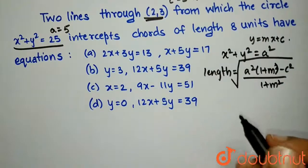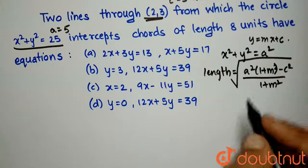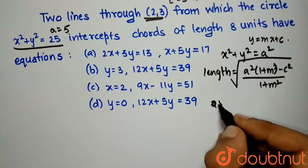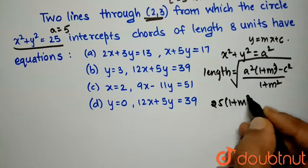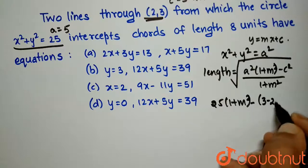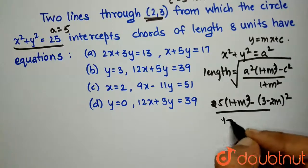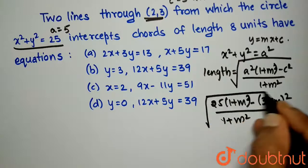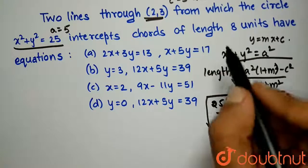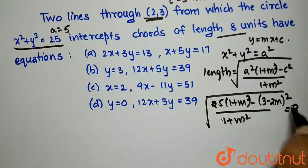So from here, if I substitute the value of a, I will get √[25(1+m²)-(3-2m)²]/(1+m²) equal to 8, since length is given to be 8 units.